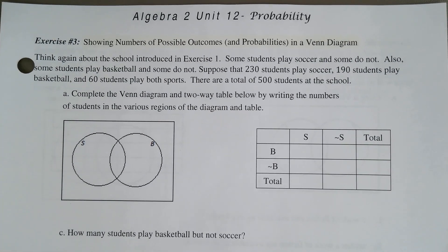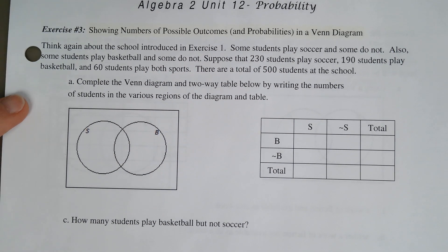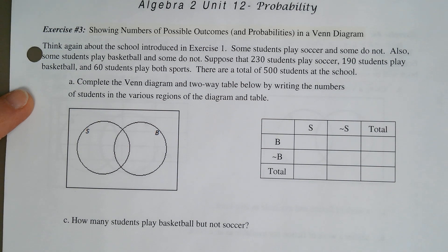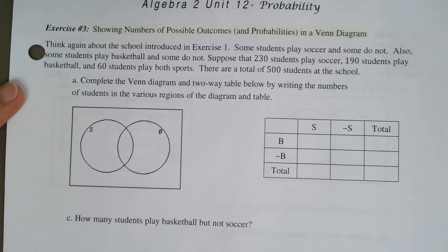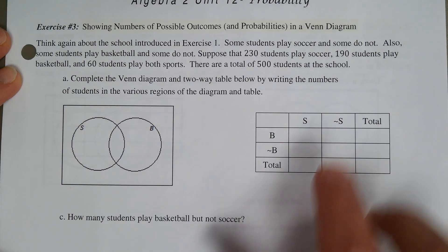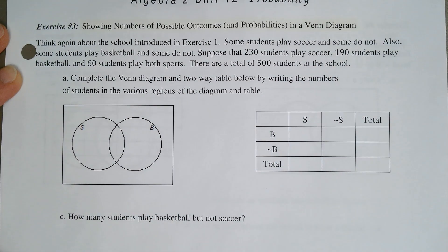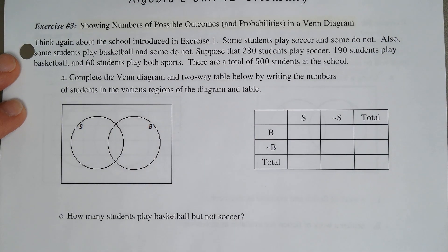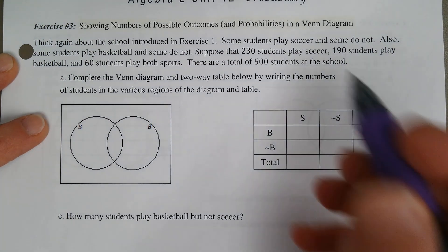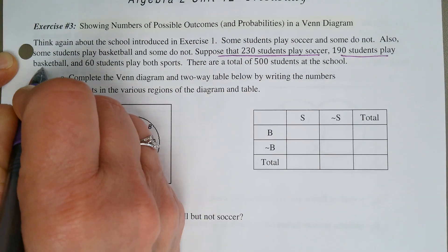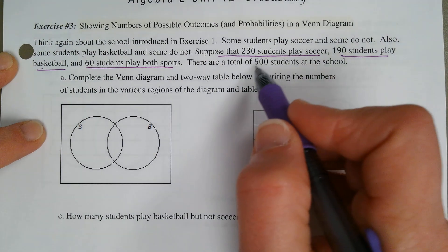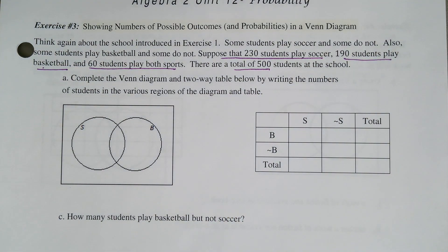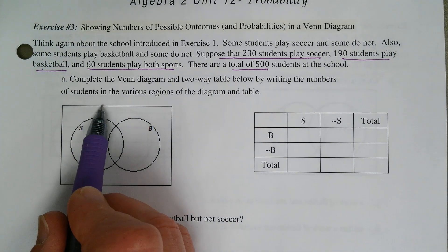Next, page 400: showing numbers of possible outcomes or probabilities in a Venn diagram. Think again about the school from exercise one with students who played soccer and basketball. Suppose 230 students play soccer and 190 students play basketball, 60 students play both sports, and there are a total of 500 students at the school. Complete the Venn diagram and the two-way table by writing the numbers of students in various regions.